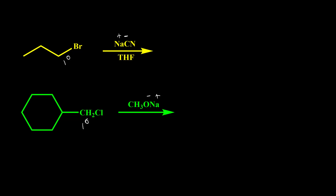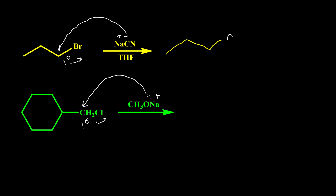In SN2 reaction, cyanide attacks and expels the leaving group. And here also, the methoxy group CH3O⁻ attacks and expels chloride. So the product for the first reaction has cyanide in place of bromine, and in the second reaction, instead of chlorine, we should have the nucleophile OCH3.